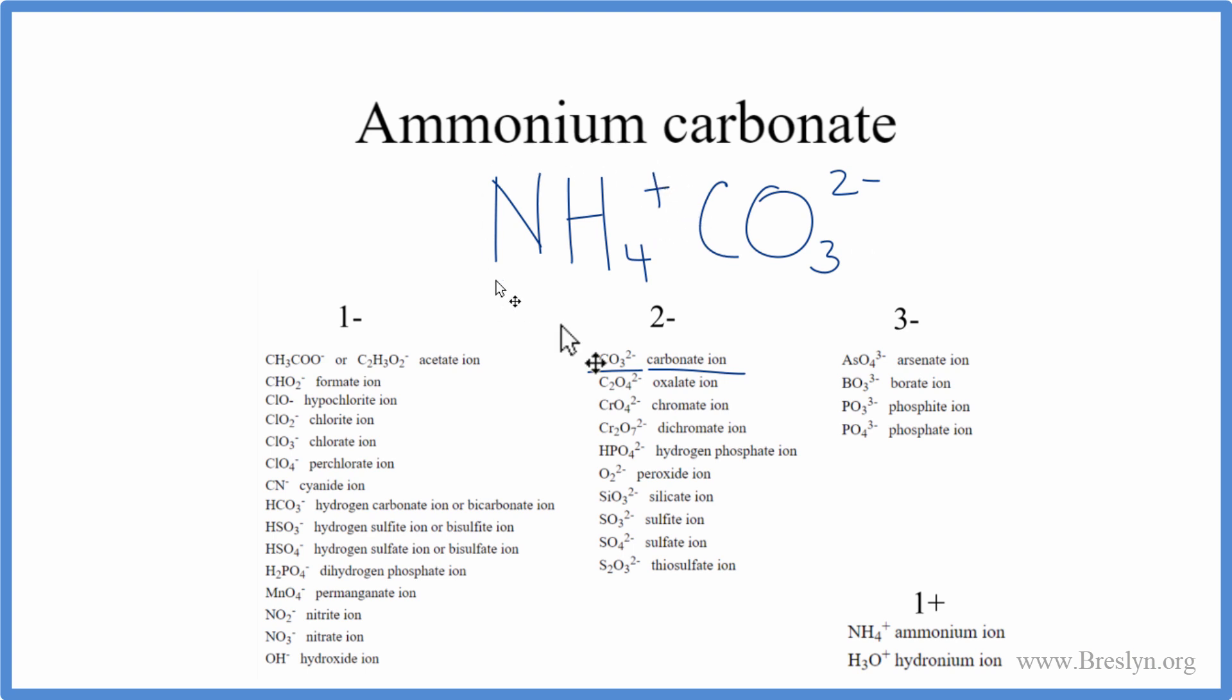So if we had two ammonium ions, that would give us two positive charges. That would cancel out the 2 minus. So what we'll do is put parentheses around the ammonium ion and put a subscript of 2 outside. 2 times the 1 plus, that's 2 plus. That'll cancel out the 2 minus, and that'll be the correct formula for ammonium carbonate.